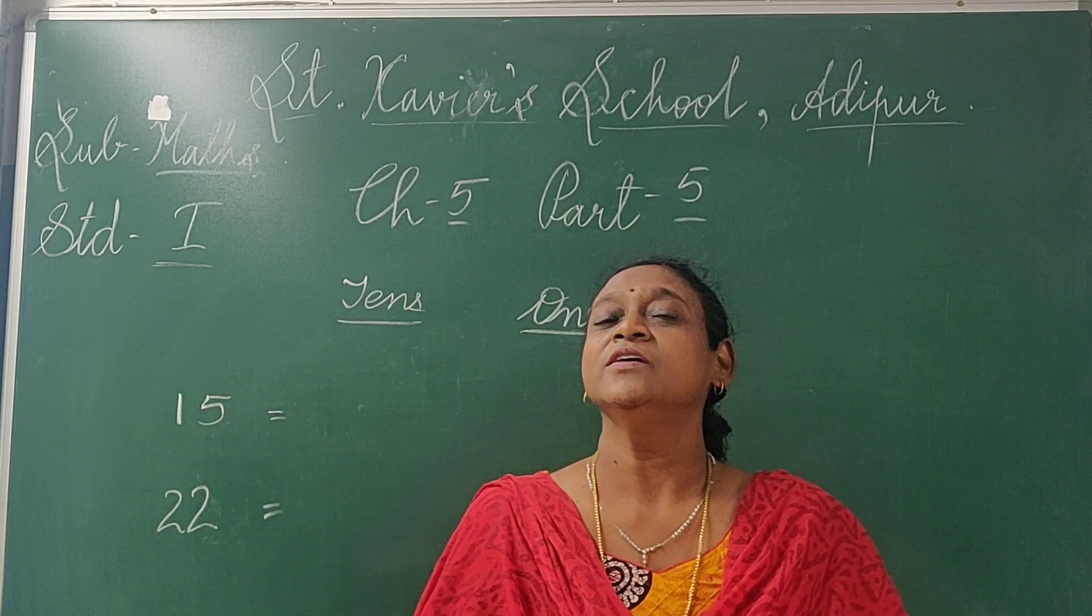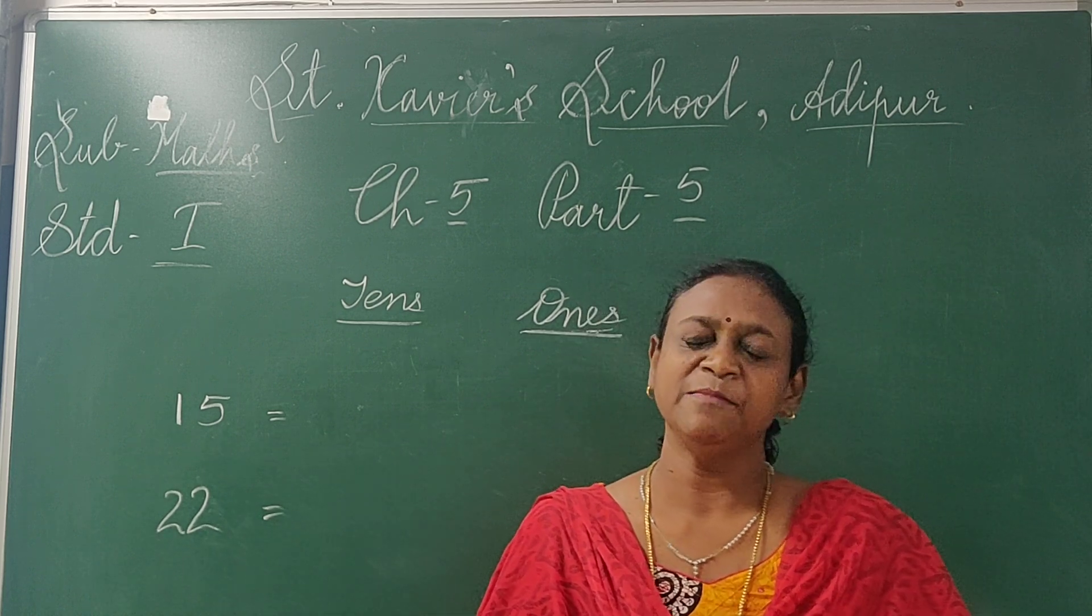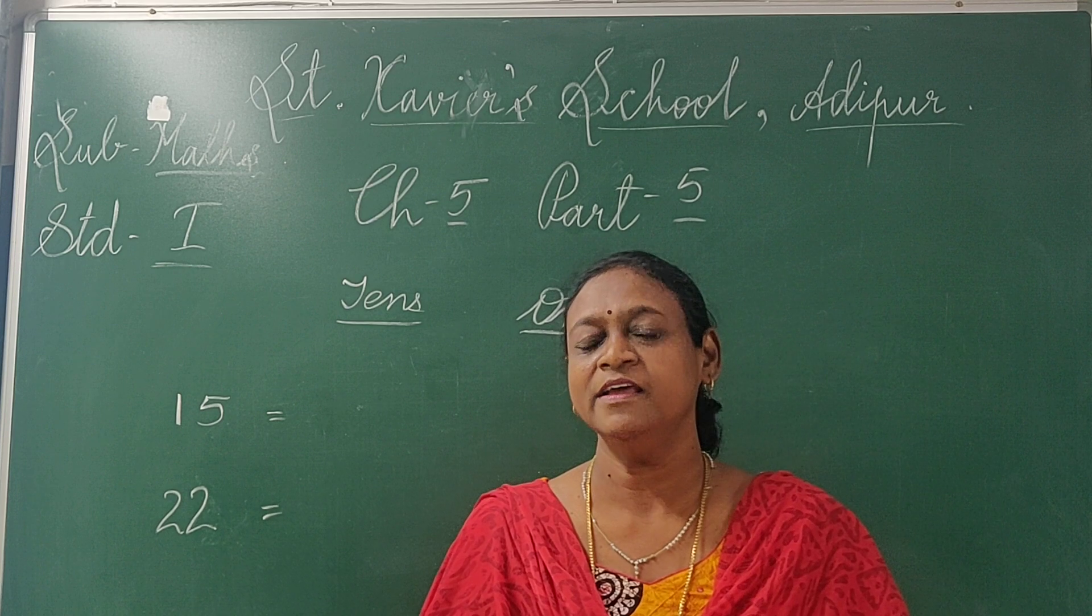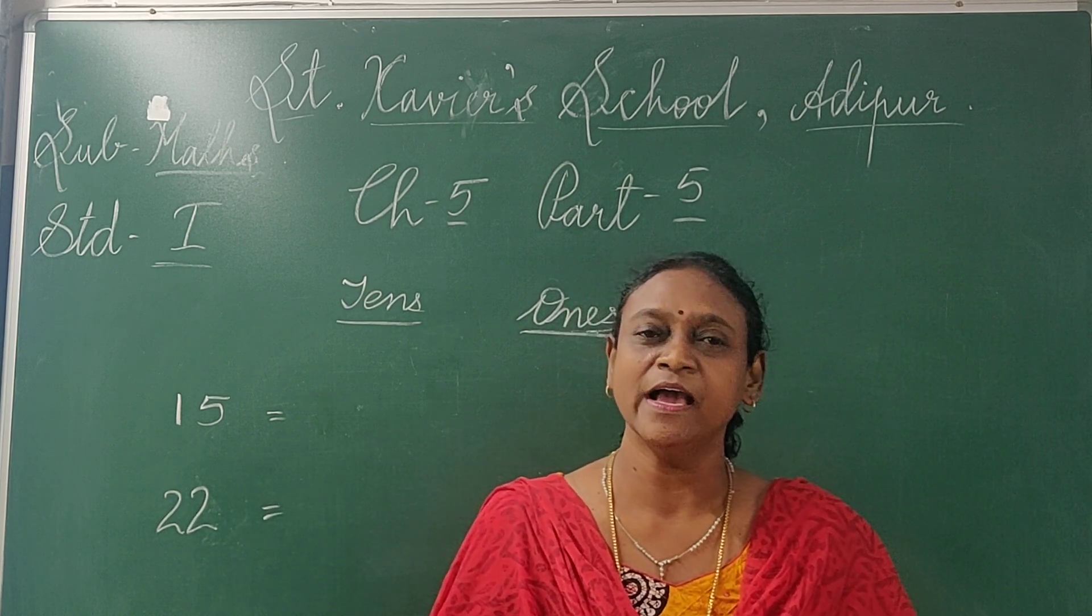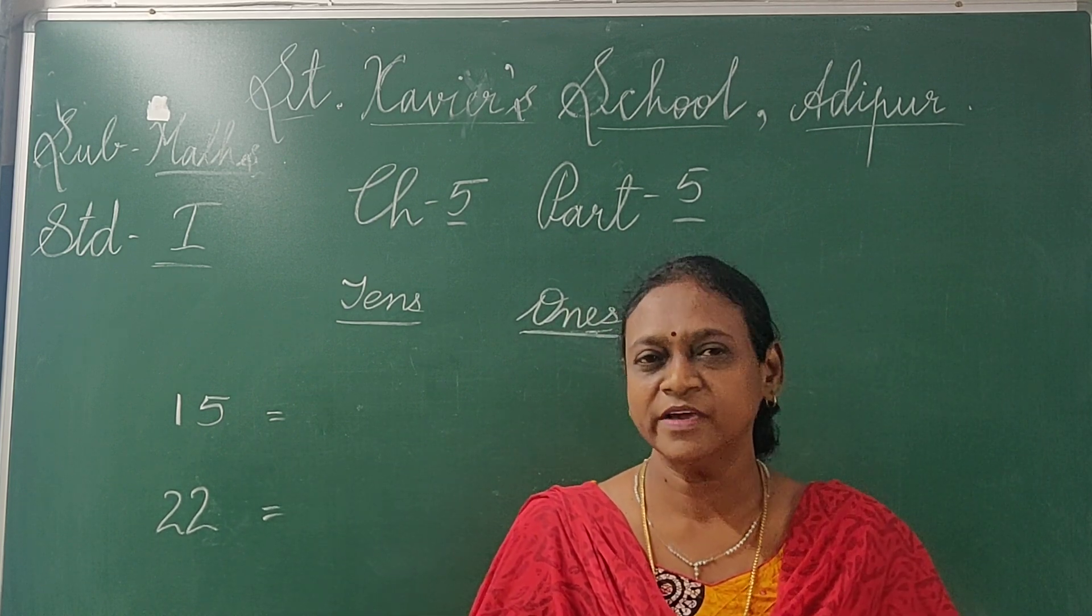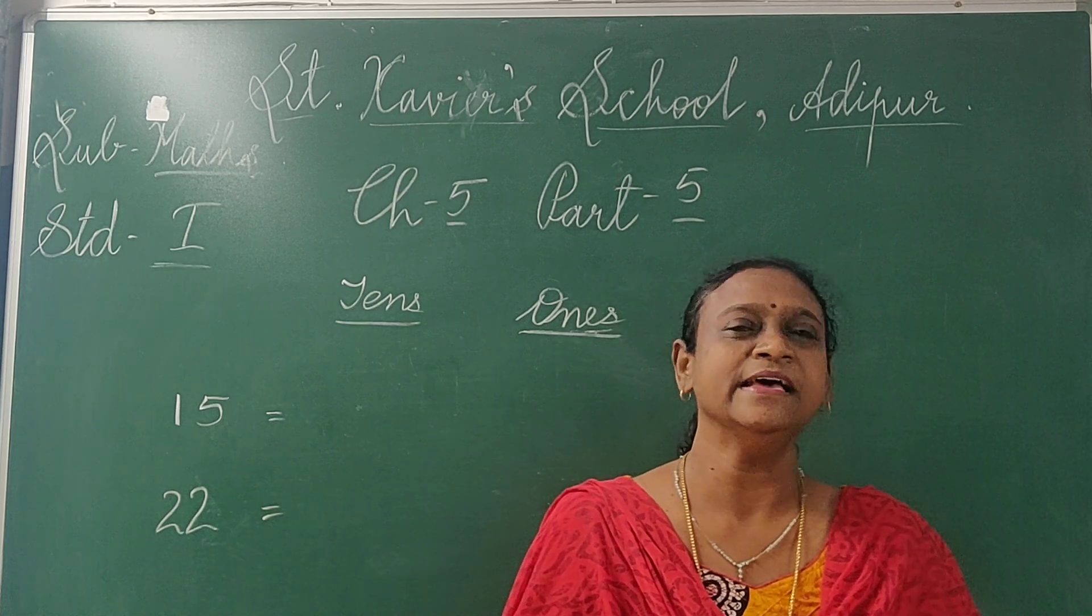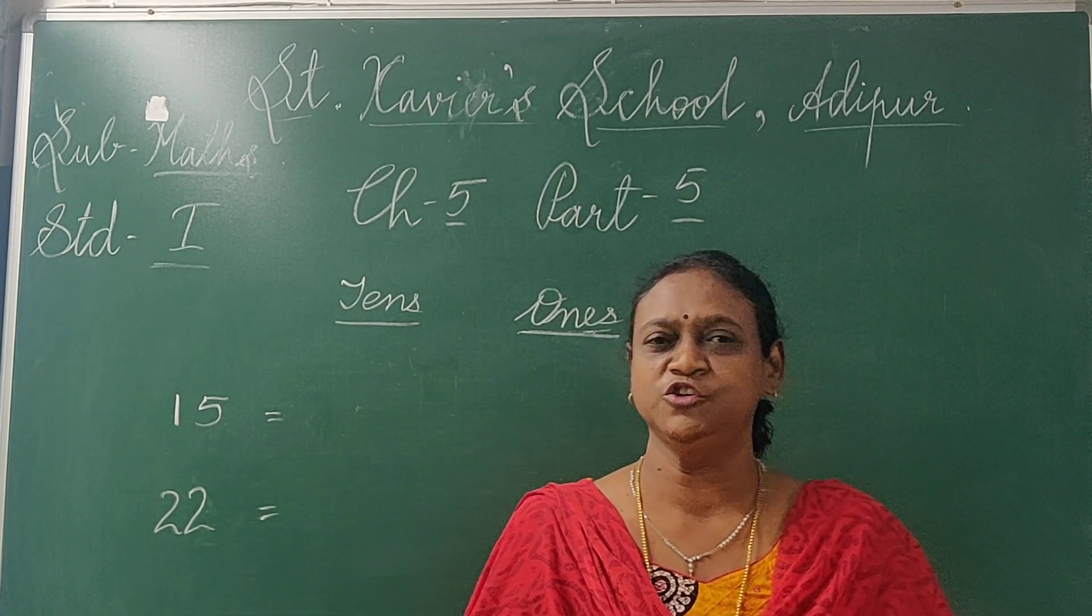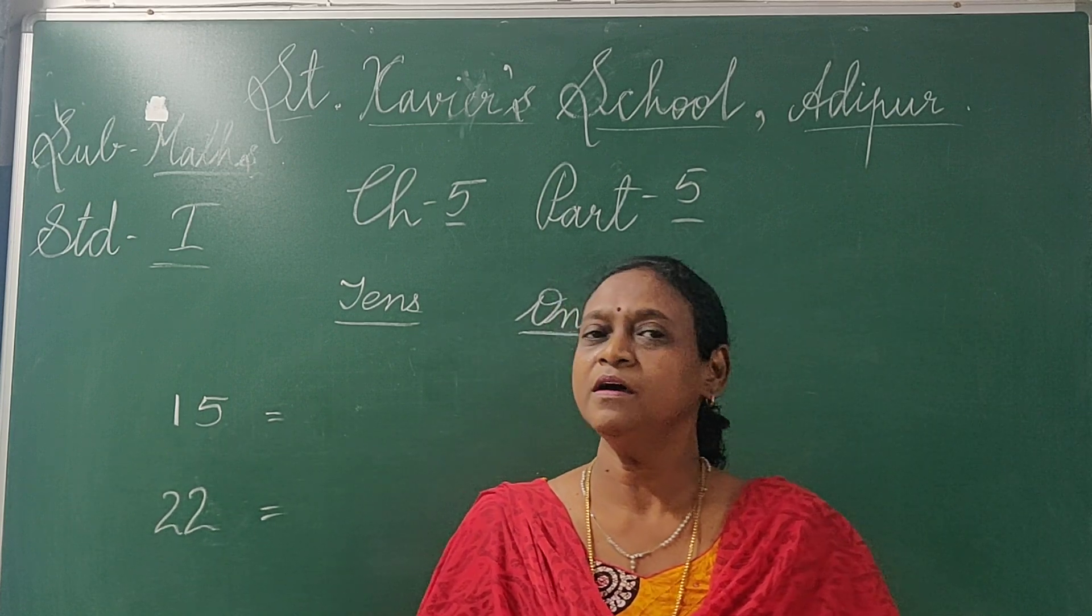Now we are in the 5th chapter. In this chapter we learned after number, before number, between number. After that I taught you how to make groups. Today with a few examples I will show you how to make the groups of tens and ones.